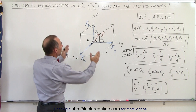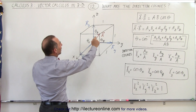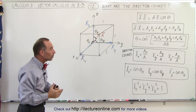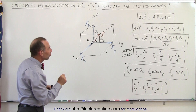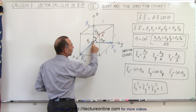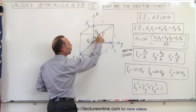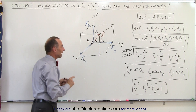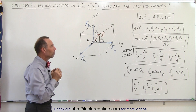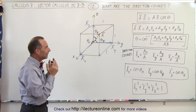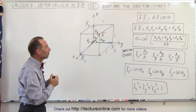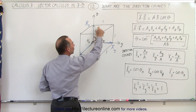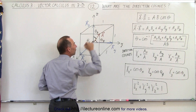First of all, let's imagine we have a cube with sides one by one by one — a cube with side equal to one. We have a vector drawn from this corner at the origin to the corner directly across, diagonally through the cube. We also have three components of the vector: a sub x, a sub y, and a sub z, which are the three components of vector a.